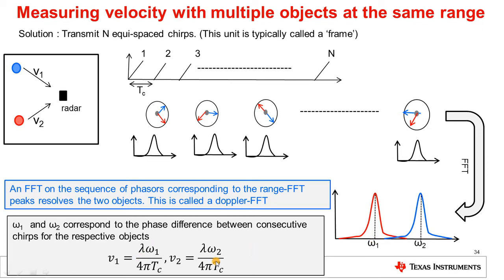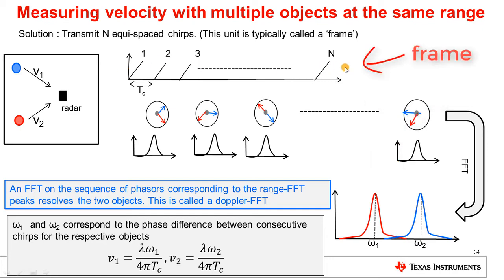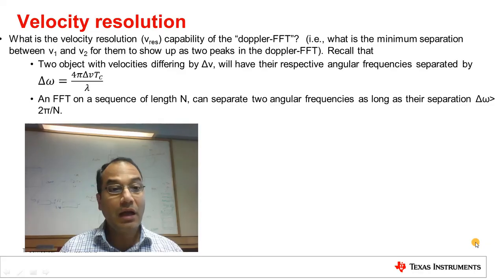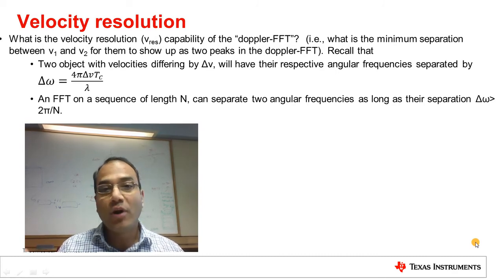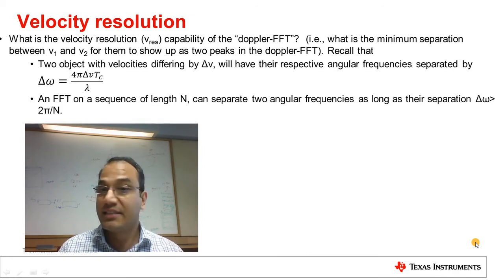Let's clarify a few terms. The FFT performed across chirps is typically called a Doppler FFT in the literature, and the sequence of equispaced chirps over which the Doppler FFT is performed is called a frame. The basic transmission unit of an FMCW radar is this frame. The velocity resolution is then defined as the minimum separation between V1 and V2 for them to show up as two distinct peaks in the Doppler FFT.